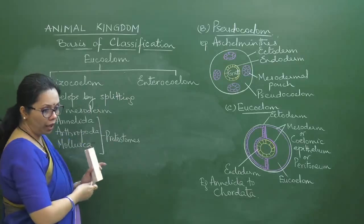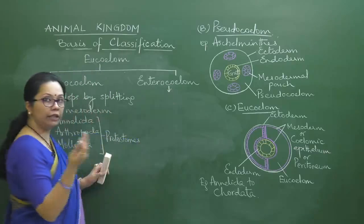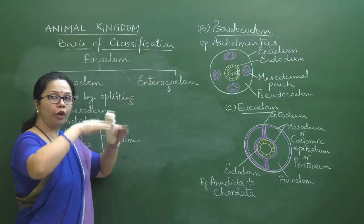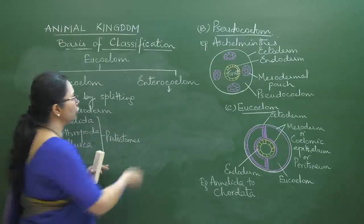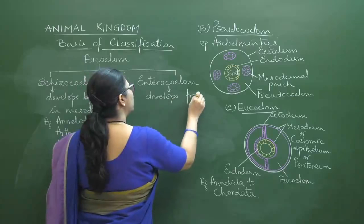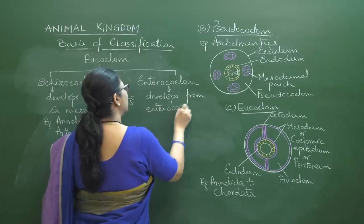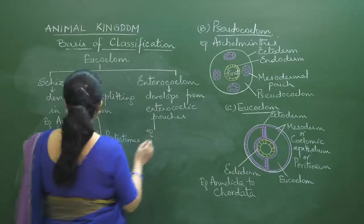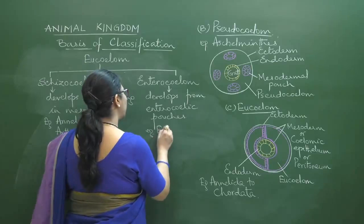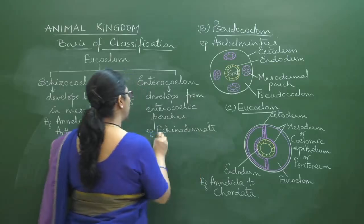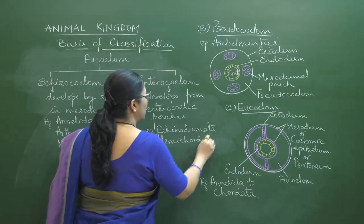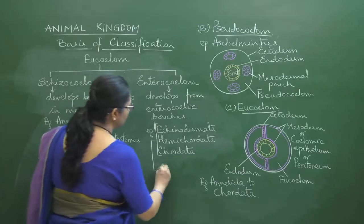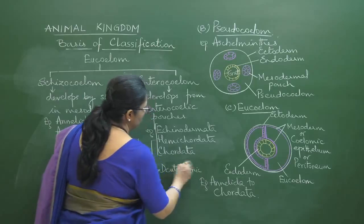Enterocoelom develops from enterocoelic pouches — small pouches arising from the primitive gut archenteron that pinch off to form the mesoderm-lined spaces. Enteron means gut. The examples are the remaining phyla: Echinodermata, Hemichordata, and Chordata. These three are also deuterostomic. So all deuterostomic animals are enterocoelom animals — they can be noted as deuterostomes equals enterocoelom animals.